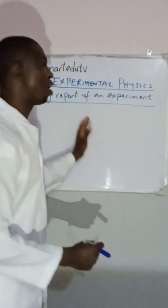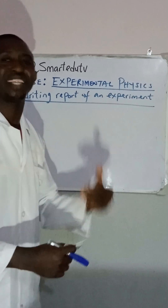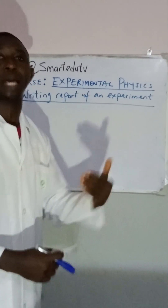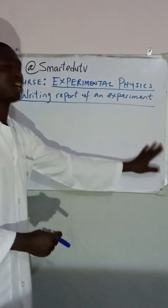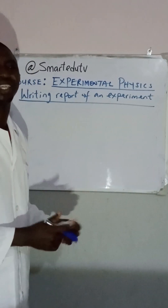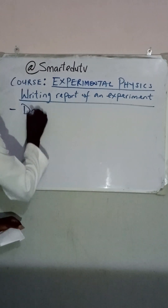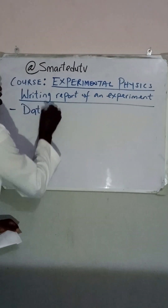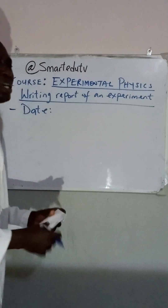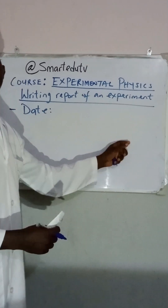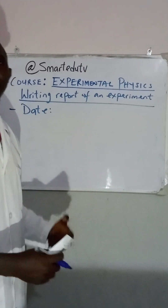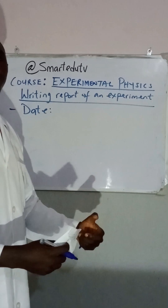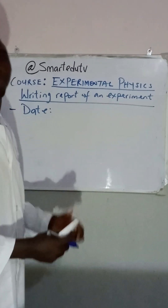To report an experiment, it has its own steps or procedure. The first thing for a good experiment report is the date. It must contain the date — the date in which the experiment was carried out. It has to be reported.